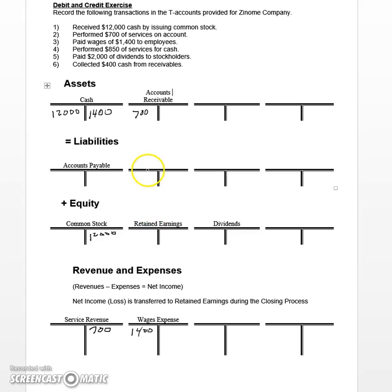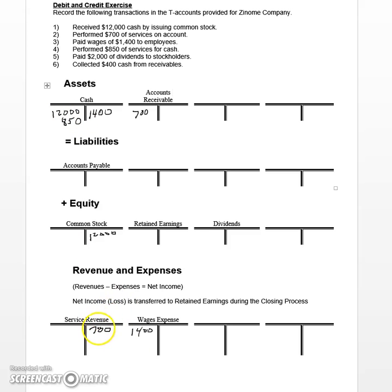Step four says we performed $850 of services, this time for cash. This is a little different than the earlier one where we performed services on account. This time, we performed the services, earned the revenue, and actually received the cash on the spot. So cash will increase on the debit left side — we'll add another entry right below the other one for $850. Then we'll increase revenue on the credit right side, just like before. The only difference is we received cash, whereas the one before was on account.